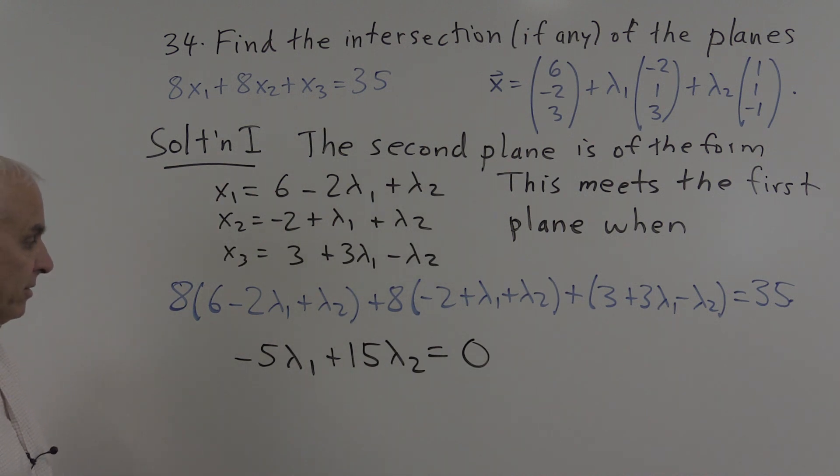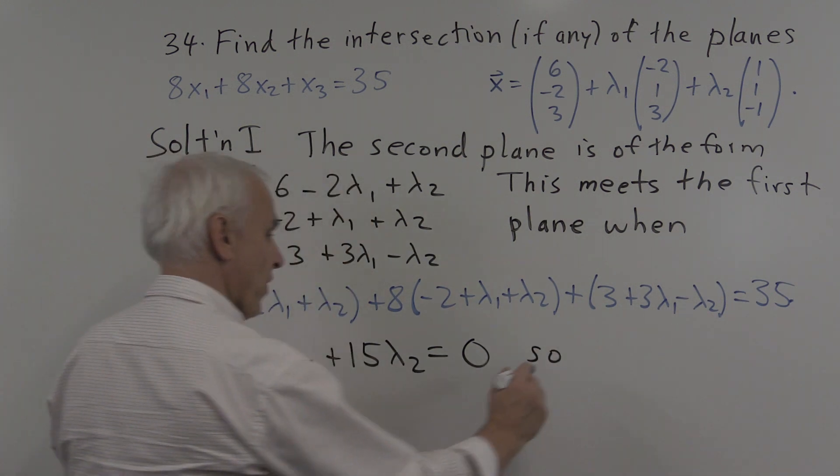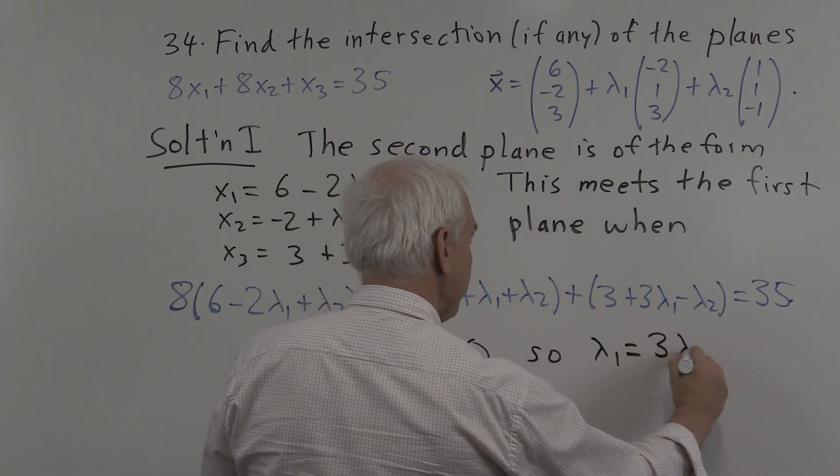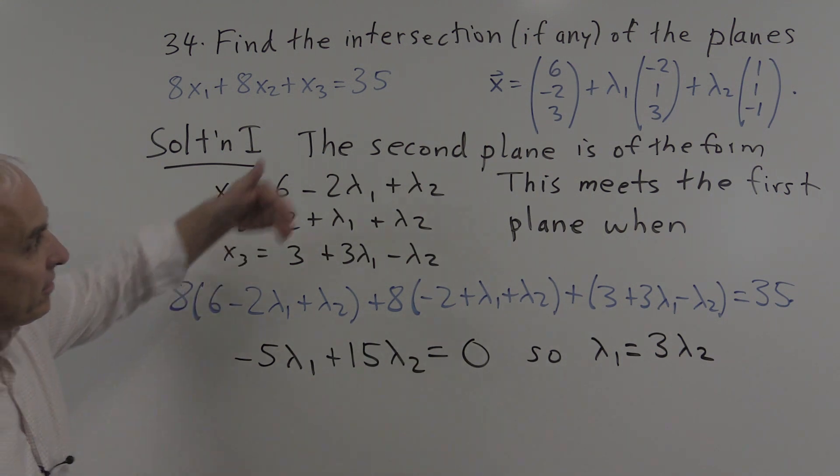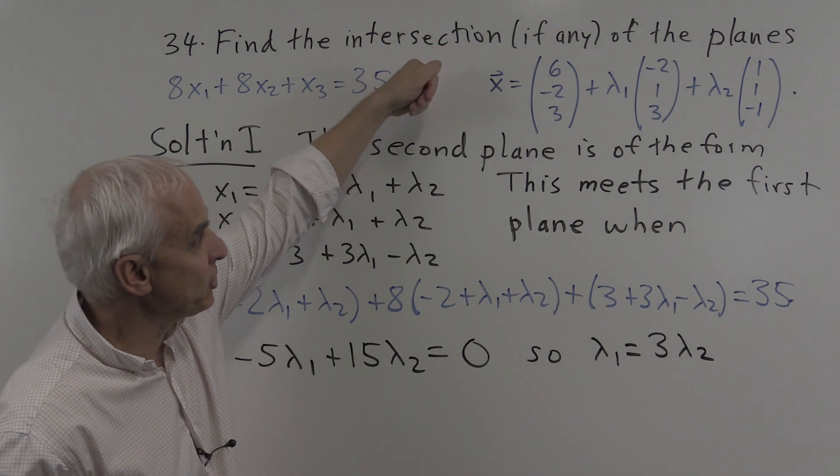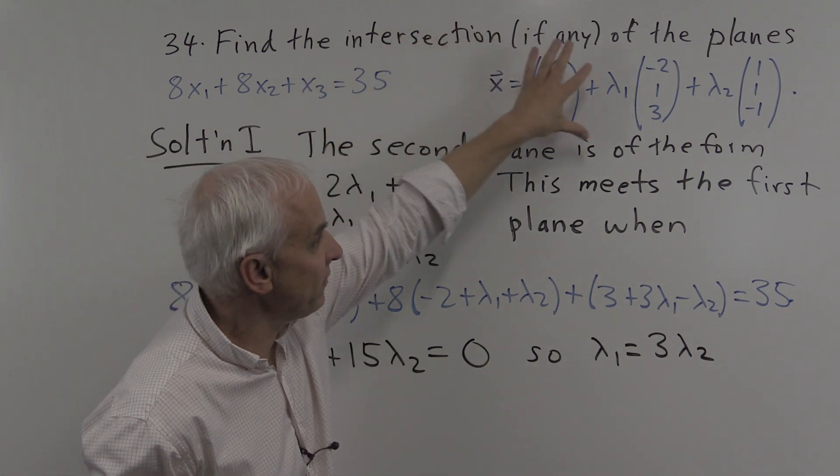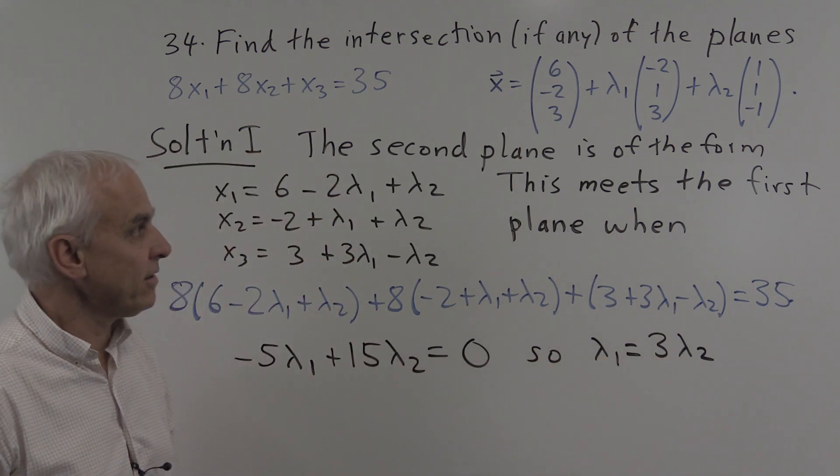Clearly we can divide by 5 so that lambda 1 equals 3 lambda 2. And so then we can describe the solution. It's all the vectors of this form where lambda 1 is 3 times lambda 2.